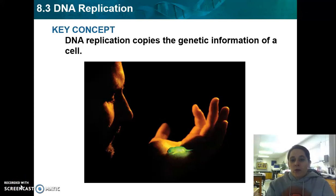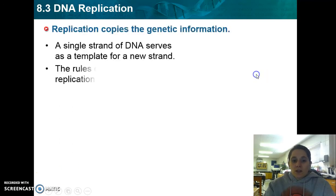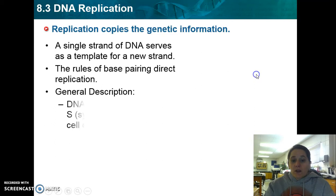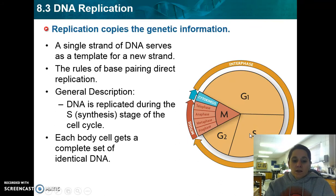Welcome to section 8.3 where we're going to talk about DNA replication. DNA replication is the process that copies the DNA so we have an identical set of DNA in each new cell. Replication happens in the nucleus of the cell. Remember the cell cycle — during the S stage it stood for DNA synthesis, which is where DNA is copied. This is the process of how it actually happens.